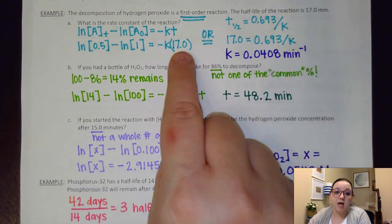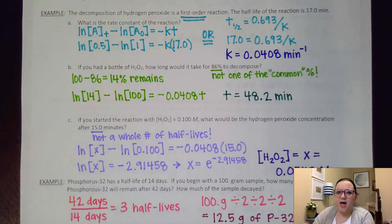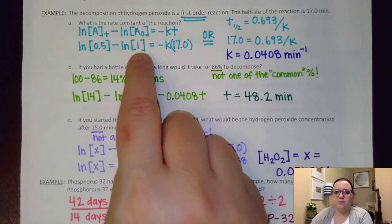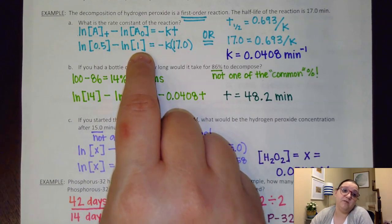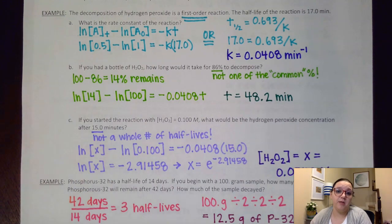What you could do then is just simply plug into that and solve. I would put my 17 minutes in for time. They didn't give me concentrations, but I know the concentration is going to be halved. So I just made up something for my initial A. I just said, what if it's one molar? If I cut that in half, that would bump down to 0.5.